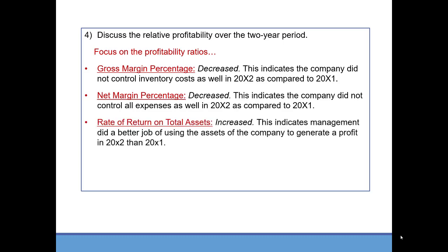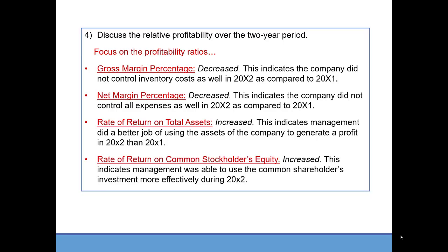However, rate of return on assets increased, meaning management did a better job of using assets to generate a profit. Return on equity also increased, so management was able to use the common shareholders' investment — common stock, additional paid-in capital, and retained earnings — more effectively in 20x2. Overall profitability was good but could have been better had they controlled expenses. Note that you will be responsible for understanding each individual ratio and what it means if it increased or decreased.